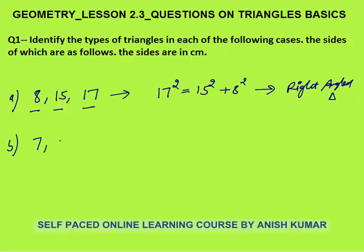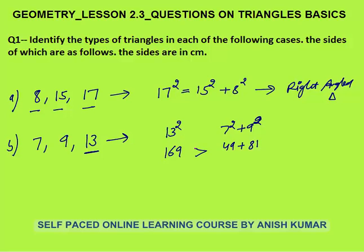Second case: sides are 7, 9, and 13. Is it a right angle triangle? No, it is not. Is it acute or obtuse? Find the square of the largest side: 13 squared is 169. Sum of squares of the other two: 7 squared plus 9 squared is 49 plus 81 = 130. Since 169 is greater than 130, the square of the largest side is greater than the sum of squares of the other two sides, so this is an obtuse angle triangle.